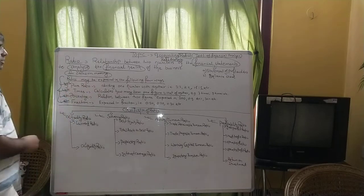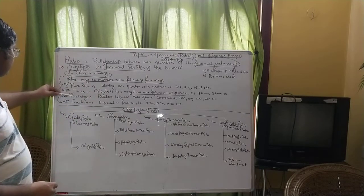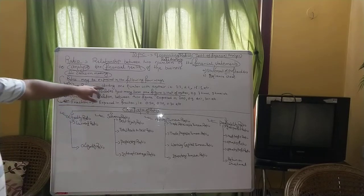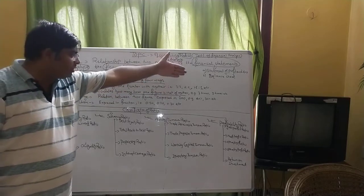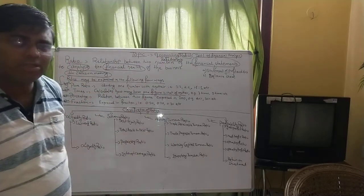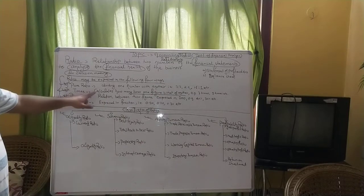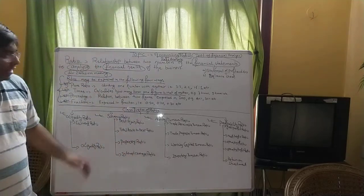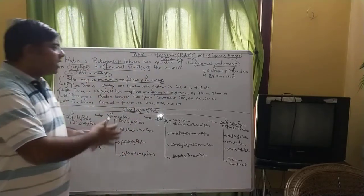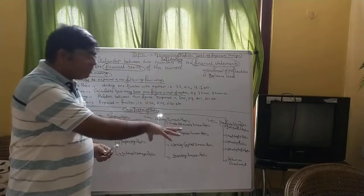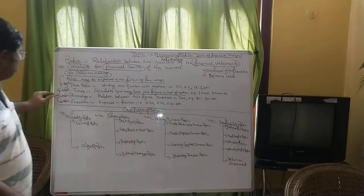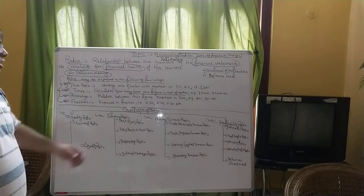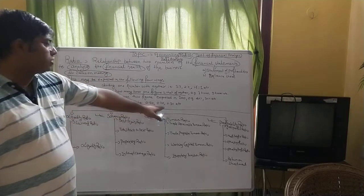Ratios can be expressed in the following four ways. First is pure ratio — simply dividing one number by another, for example 3:2 or 1.5:1. Second is times — calculating how many times one figure is that of another. Third is percentage — expressing the ratio as a percentage. And fourth is fractions — expressing in decimal form, such as 0.10 or 0.20.